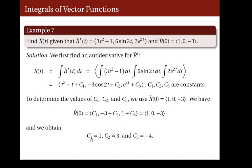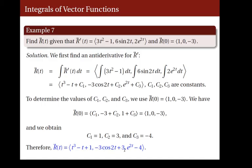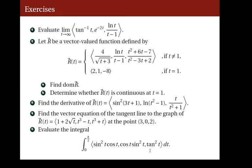Knowing the values of c1, c2, and c3, all we need to do is to plug in these numbers back to the expression for r of t. And so finally, we obtain r of t equal to the vector t cubed minus t plus 1, negative 3 cosine 2t plus 3, and e to the 2t minus 4. That concludes the lecture for this topic, and I hope you can try answering the following exercises.